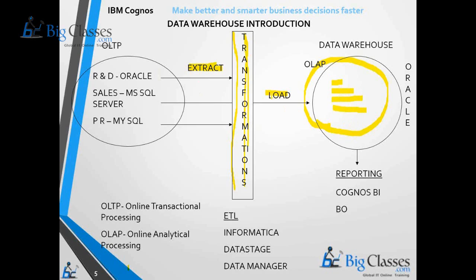This process — extraction, transformation, and load — is called the ETL process. Using ETL tools, we load data from source to target, which is the data warehouse. Different ETL tools are available in the market: Informatica, DataStage, Data Manager, and many others. Using these tools we populate or load data into the data warehouse.